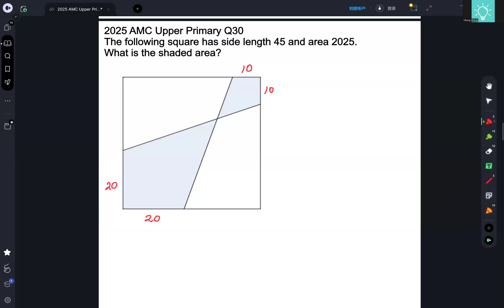In this video, I'll be going through the solution to question 30 from the 2025 Australian Math Competition Upper Primary Paper. We are given a square with side length 45 and an area of 2025, and we are given these lengths to be 10 and 20. They're asking us what is the shaded area?